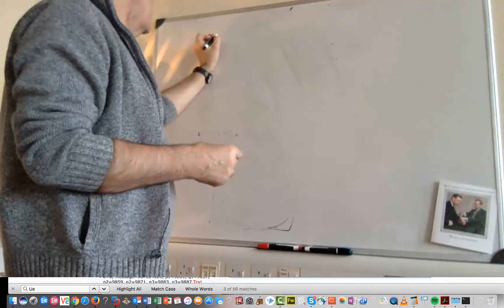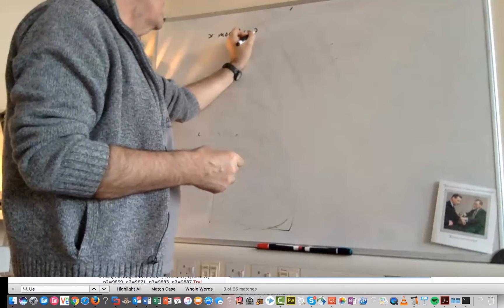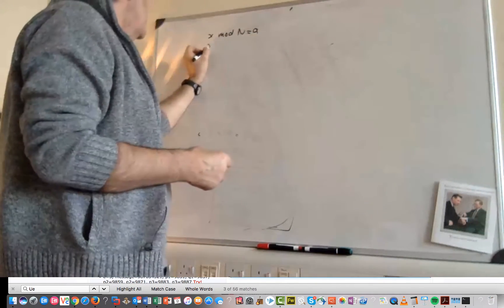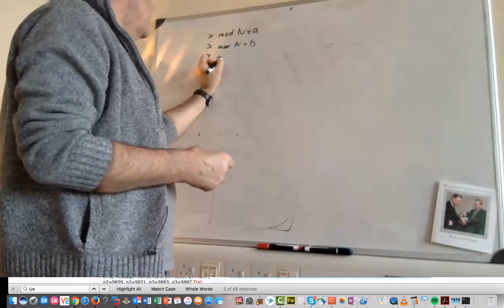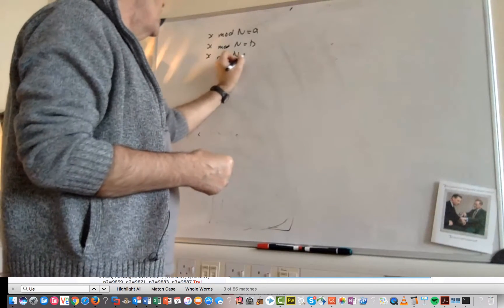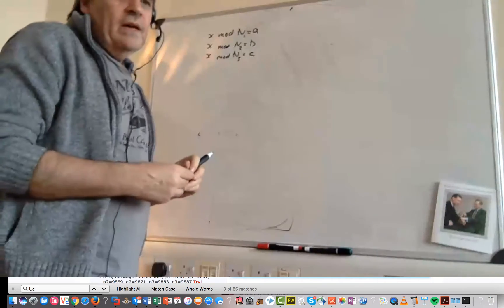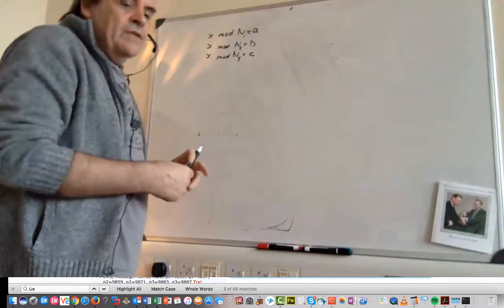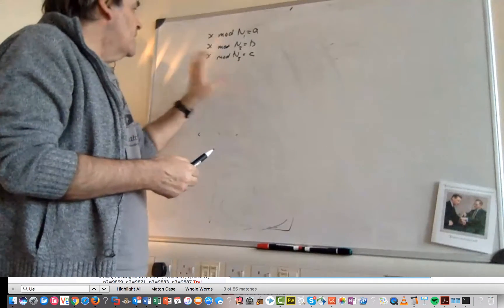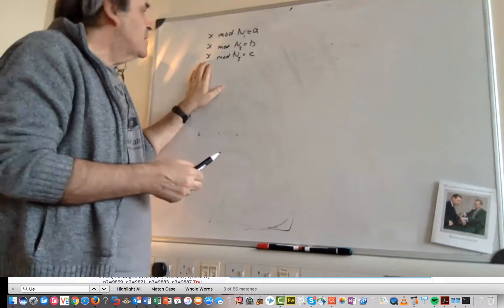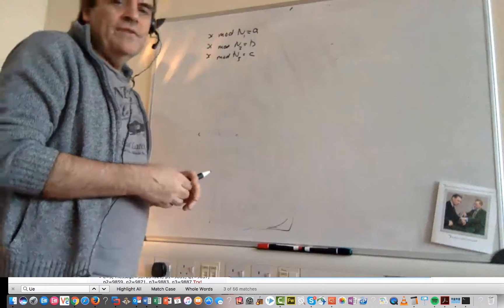So with Chinese remainder theorem we can actually solve something where we take a value and get the same value mod N, the same value mod N equals C. So Chinese remainder theorem allows us to solve this equation for the value of X where we have three different N values and we have three different results here.